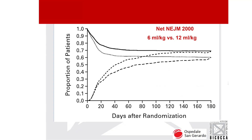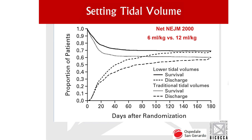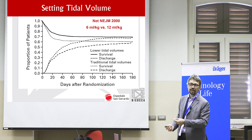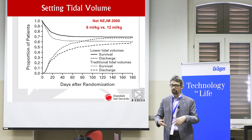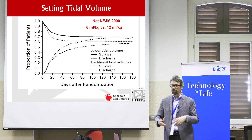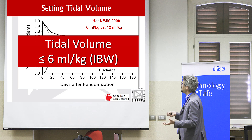The first point is tidal volume. If the ARDS Network got one cent by every time this slide was shown, they would have enough money to run trials for the next 20 years. Still, we have this rule that we should aim for a tidal volume of six milliliters per kilogram ideal body weight.